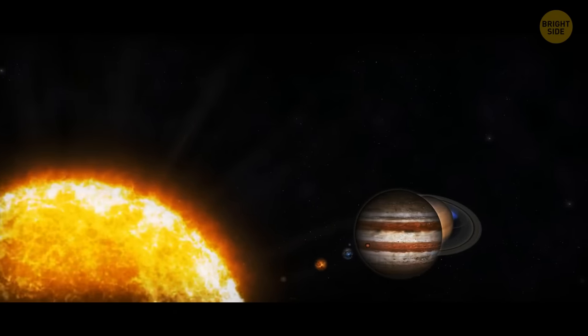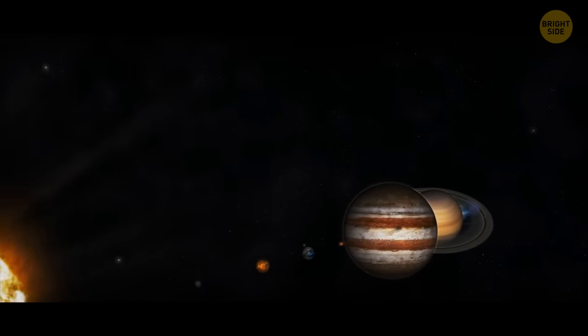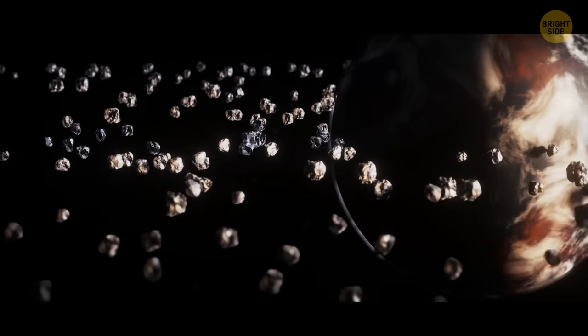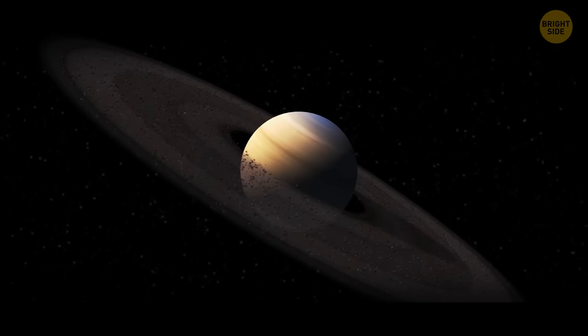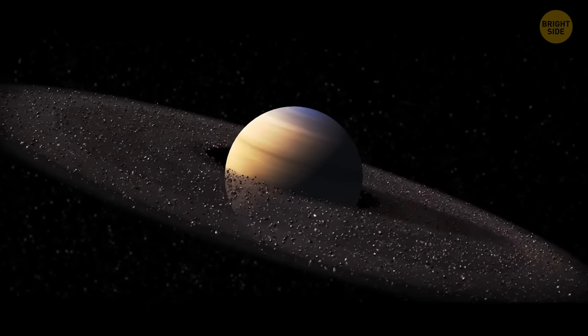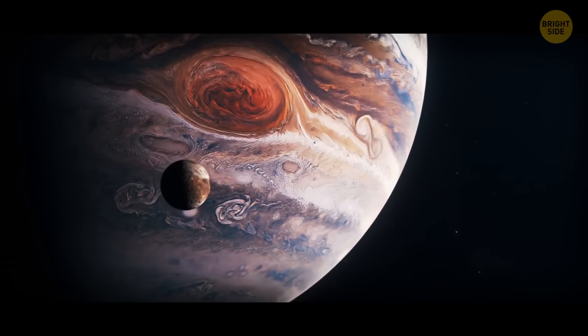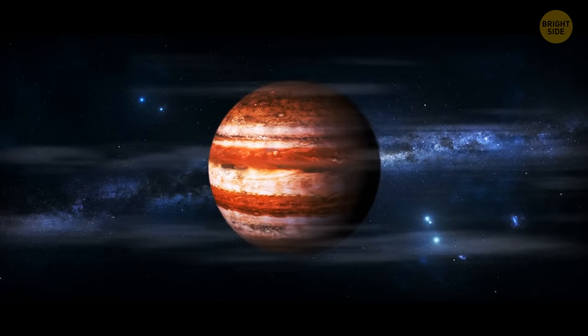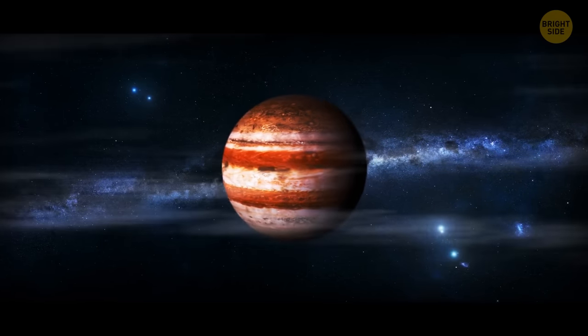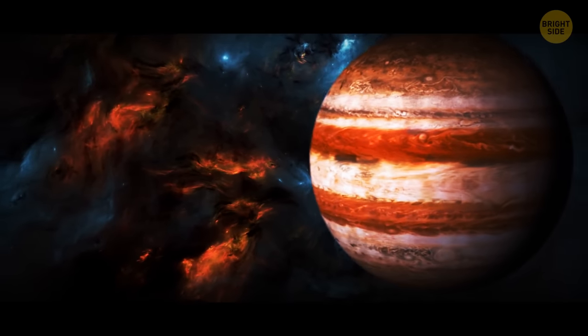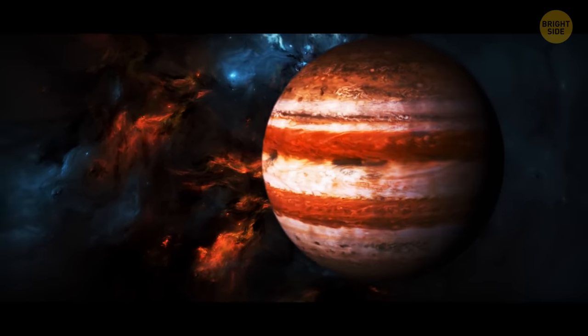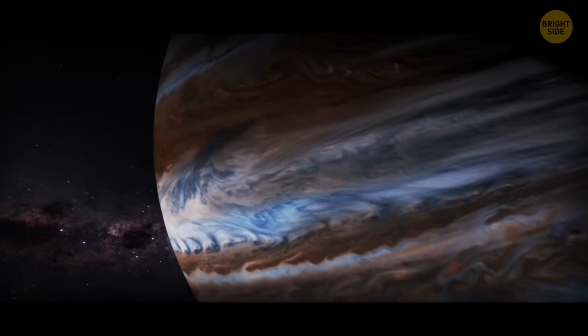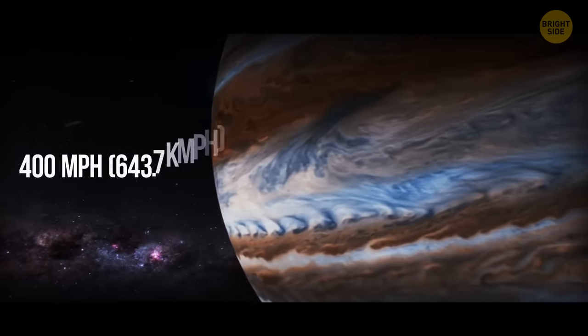But the oddities of our solar system don't end there. There are also planets with super-fast rotations. While most planets rotate at a fairly sedate pace, some of them are sonic levels fast. Jupiter, for example, rotates once every 9 hours and 56 minutes, which means that it has a day that's less than 10 hours long. That's fast enough to cause the planet to bulge out at its equator. And also, this rapid rotation creates strong bands of winds that can reach speeds of up to 400 miles per hour.